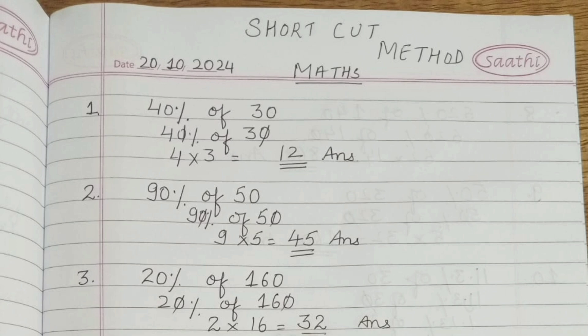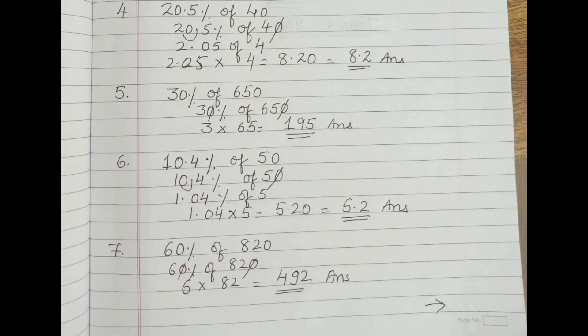Next question: 20.5% of 40. This is in decimal form. Here zero is not on one side - the decimal point is on one side. On the right side, 40 has a zero for cutting. Cut the zero from 40, then shift the decimal in 20.5.